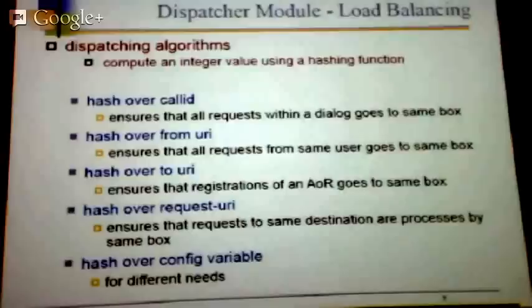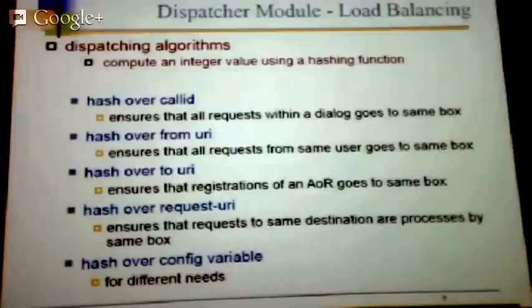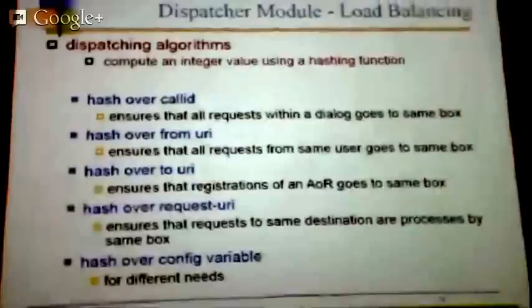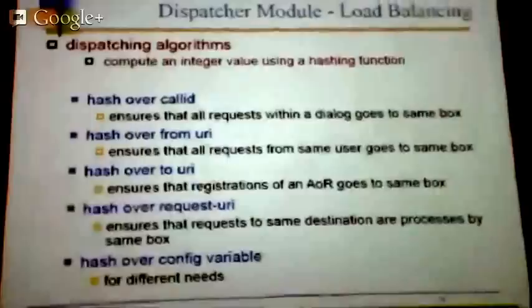Call-ID is a SIP protocol field that ensures every request inside the same dialogue — the same call — goes to the same node, no matter if you do record routing or anything else. So you can have completely stateless routing by this algorithm, and all requests from the same call keep the same server. Then you can hash over caller ID, over Call-ID, over request URL to ensure calls from the same caller go to the same box or calls to the same destination go to the same box. You can store the value you want to hash in a variable and take it from remote party ID, authentication username, or other SIP attributes.